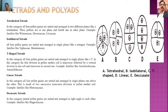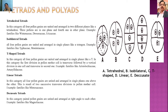In decussate tetrads, the paired pollen grains are united and arranged at right angles to each other. As seen in the diagram, two cells are arranged in one orientation and two cells are arranged perpendicular to them, giving the right-angle arrangement characteristic of decussate tetrads.